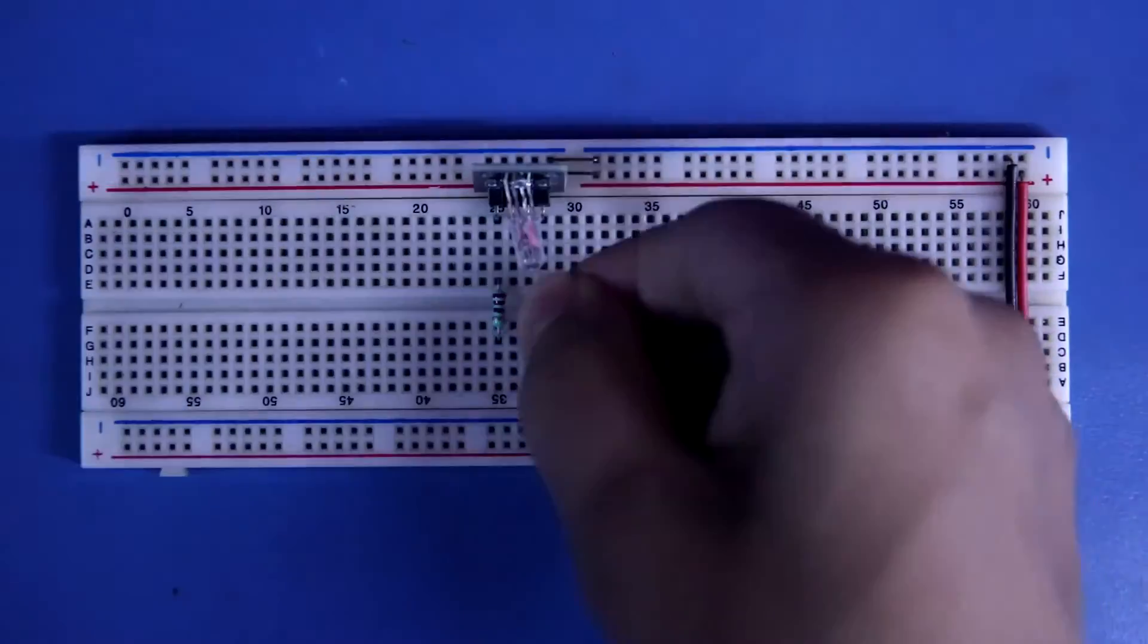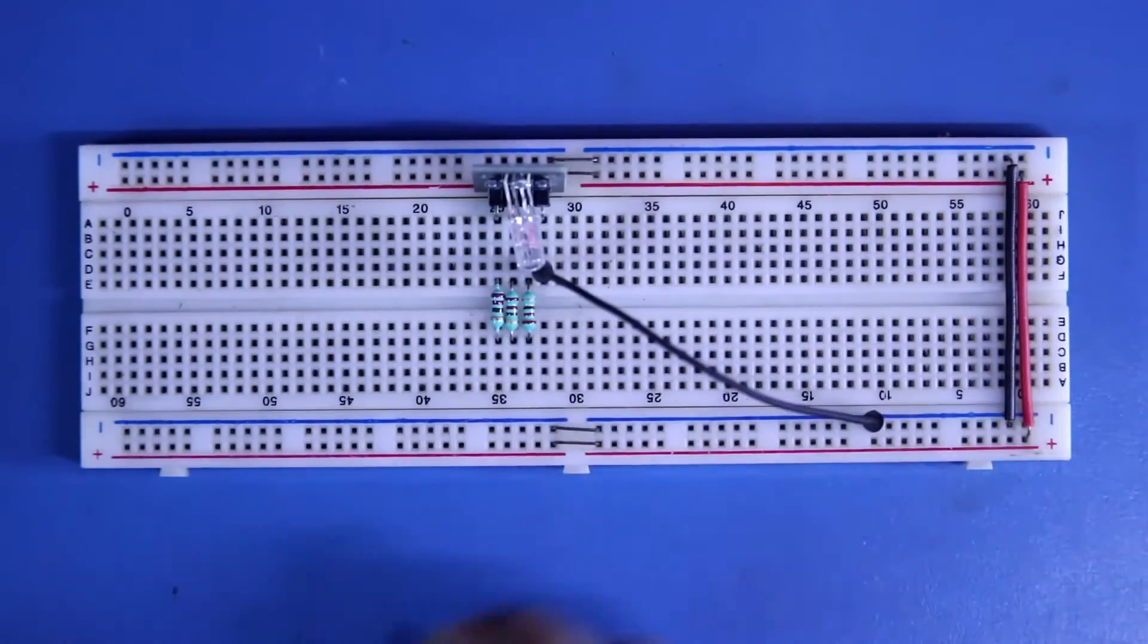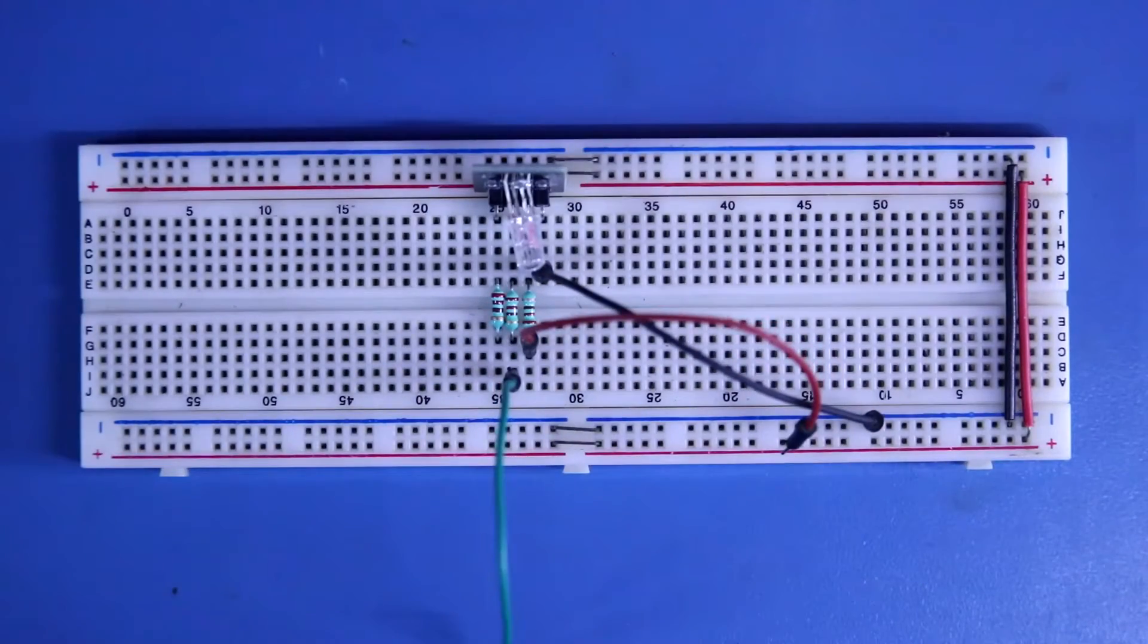With 3 pins connecting 220 ohm resistor. Negative pin is connected to the ground. This is R, G, and B.